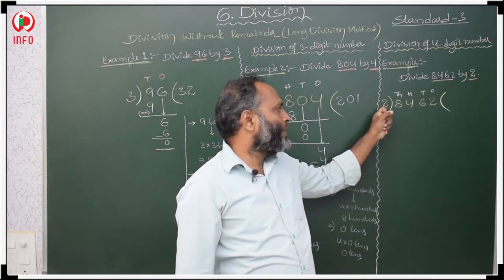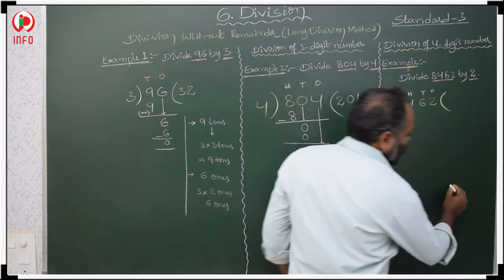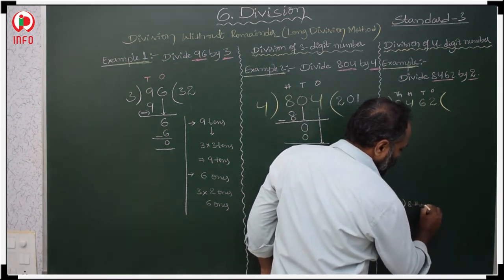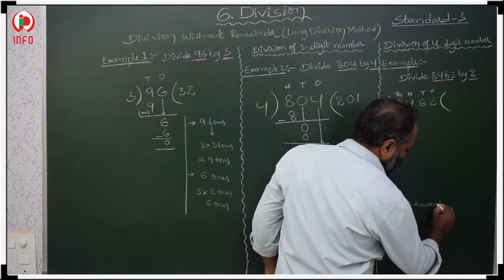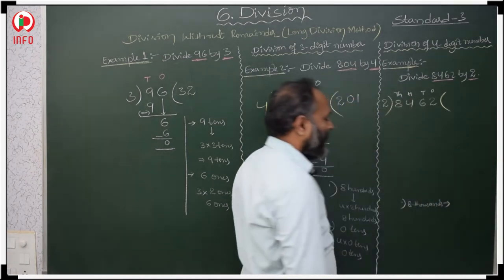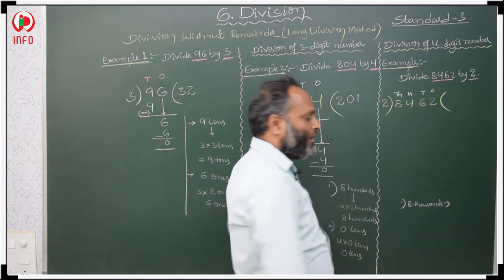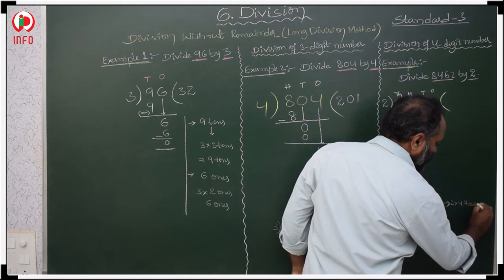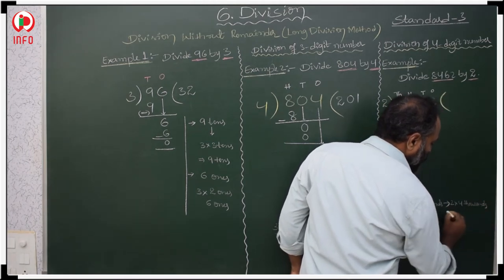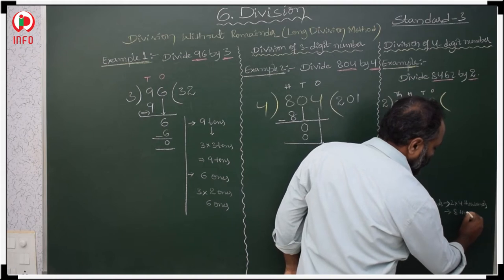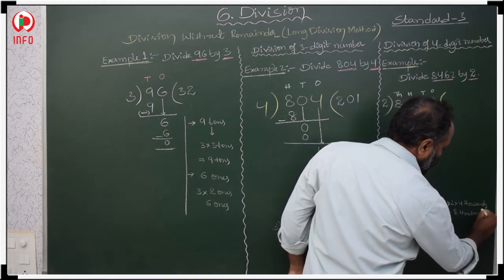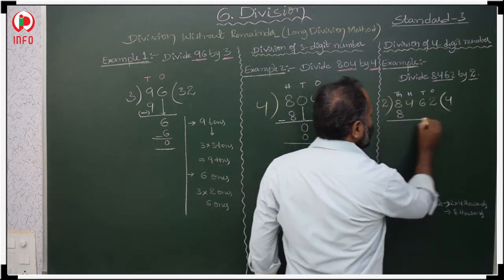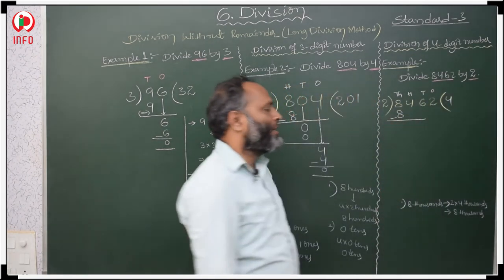8 is in the 1000's place. In the 2 times table, when will you get 8,000? 2 times 4,000 is 8,000. So we write 4 in the quotient. Same number minus same number is 0.